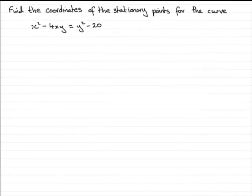Hi. Welcome to another tutorial in my series on Implicit Differentiation. Now in this tutorial, what we're going to look at is find the coordinates of stationary points. And we're going to do it for the curve x squared minus 4xy equals y squared minus 20.